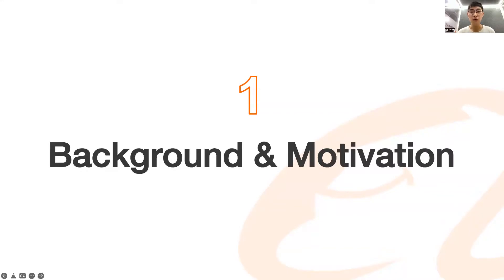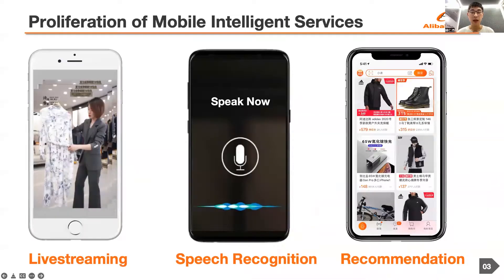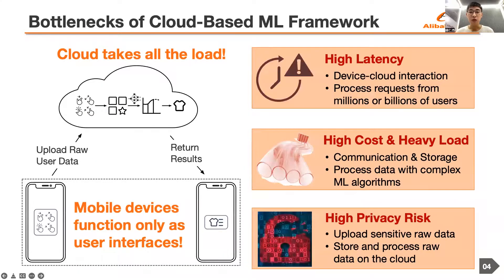I first introduce the background and motivation of Wally. Nowadays, users can enjoy diverse intelligent services on their mobile devices, such as live streaming, speech recognition, recommendation, and so on. The mainstream mobile machine learning paradigm lets mobile devices send requests with raw data and lets the cloud return results after data processing and model execution. Such cloud-based paradigm encounters the bottlenecks of high latency, high cost, and heavy load, as well as high privacy risk.